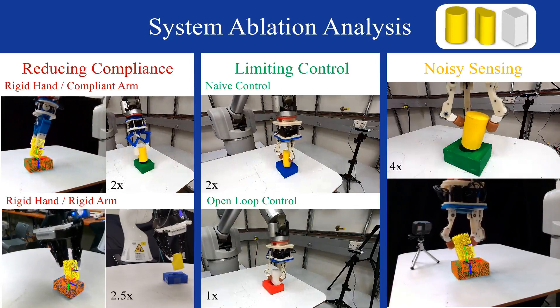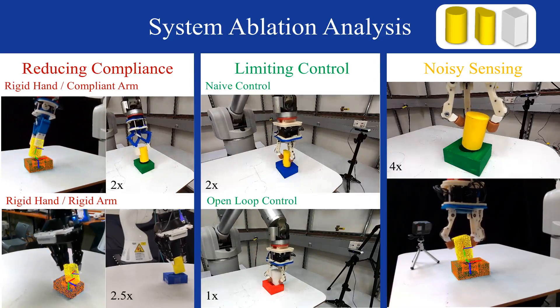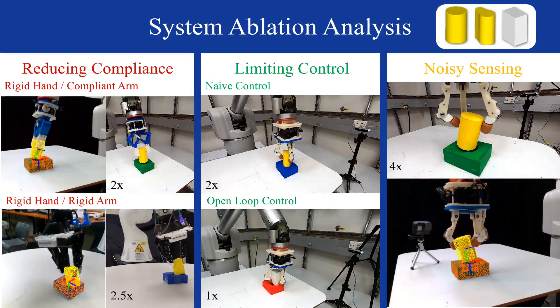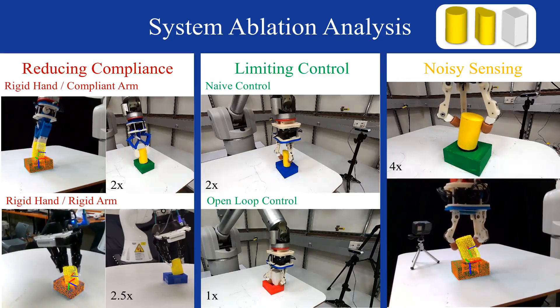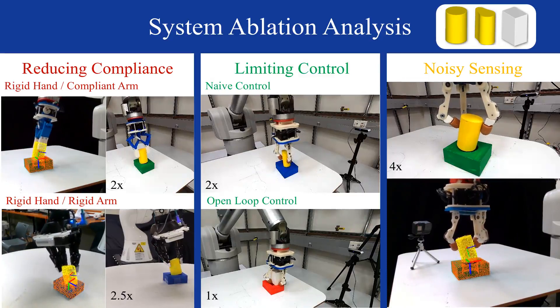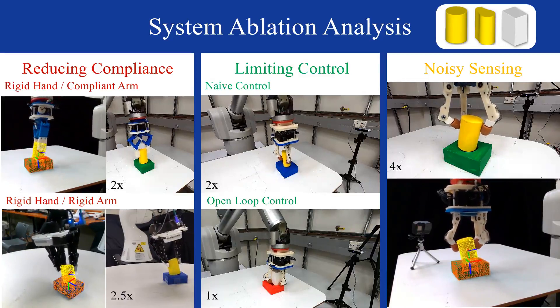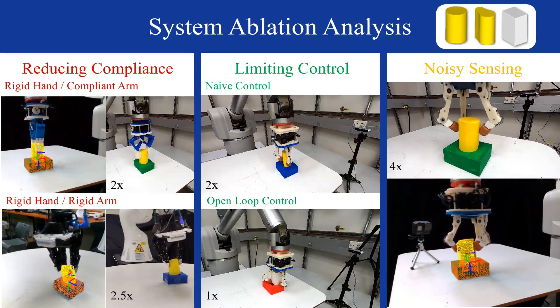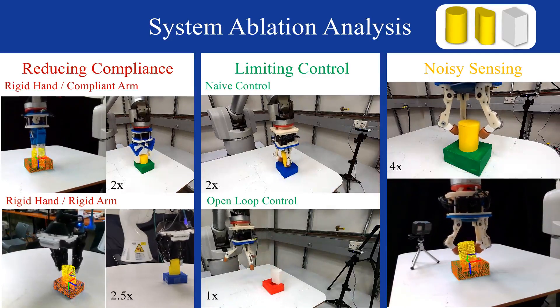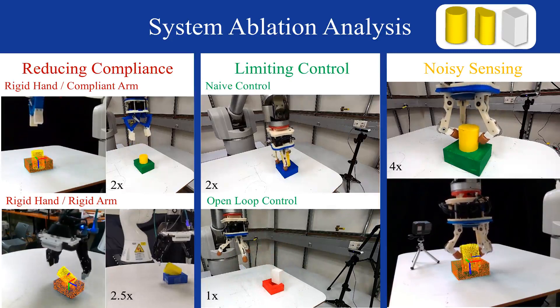Reducing system compliance made the task more difficult and encouraged object jamming. Naive and open loop control performed extremely poorly without feedback, missing nearly 100% of the time. Interestingly, by adding sensing noise, our system was still able to complete the task almost half of the time, due to the robustness afforded by system compliance.